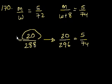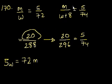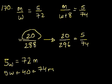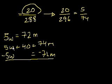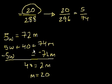But we could also do it algebraically. You could say 5 times the workers is equal to 72 times the managers. And 5 times workers plus 40 is equal to 74 times the managers. Subtract these equations. These cancel out. You get 40 is equal to 2 times the managers. So the managers are equal to 20.